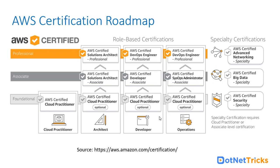Moving on from the cloud practitioner level, there is an associate level, and after that a professional level. For professional certification, you must have the associate level certifications — it is mandatory. This particular course is designed keeping in mind the solution architect associate level, and we are going to follow the guidelines set by AWS. At the associate level, there are three exams: AWS Certified Solutions Architect Associate, AWS Certified Developer Associate, and AWS Certified SysOps Administrator Associate.